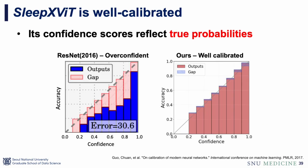On the left, we see the poorly calibrated, overconfident model ResNet. On the right, our model shows that accuracy and confidence are well aligned. As a result, clinicians can use our confidence scores as a guideline to decide whether to trust the model's prediction.